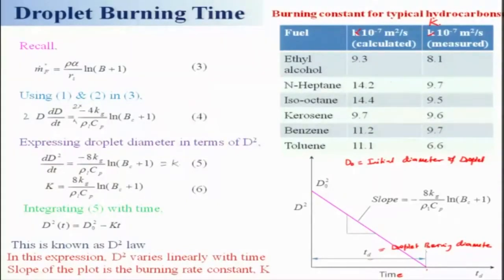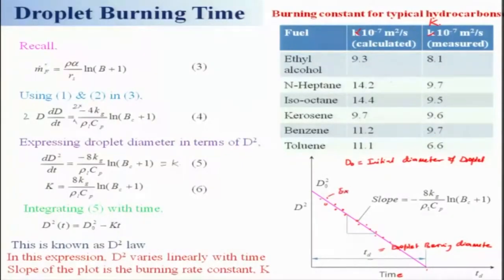So d² varies linearly with time and the slope of the plot is the burning rate constant K. You can match experimental data points to this line — people generally place some data here and try to match. There will be some scatter, and you identify the best matching line. We will now take an example to evaluate this.